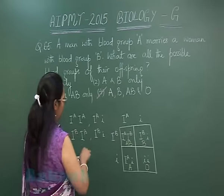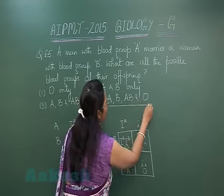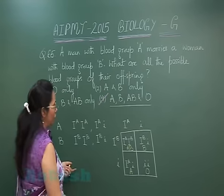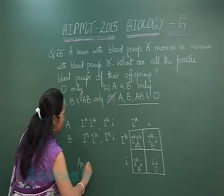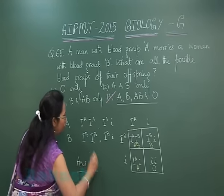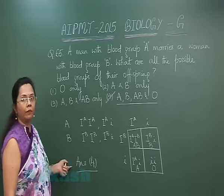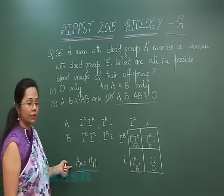So all four combinations are possible, and our answer would be the fourth option where all four blood groups are given. The answer is option 4. Let's move on to question 66.